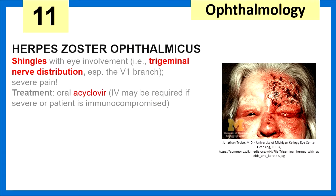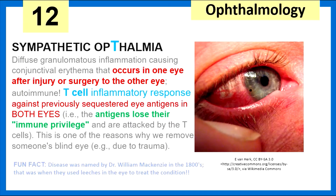Herpes zoster ophthalmicus — basically shingles with eye involvement in the trigeminal nerve distribution, especially V1, with severe pain. Treatment is oral acyclovir, but IV may be required if severe or the patient is immunocompromised. Sympathetic ophthalmia — one eye gets injured or undergoes surgery, and there's a T-cell inflammatory response against previously sequestered eye antigens, and the response affects both eyes. Fun fact: this disease was named in the late 1800s, and 'sympathetic' is a complete misnomer — it doesn't really have anything to do with the sympathetic nervous system.